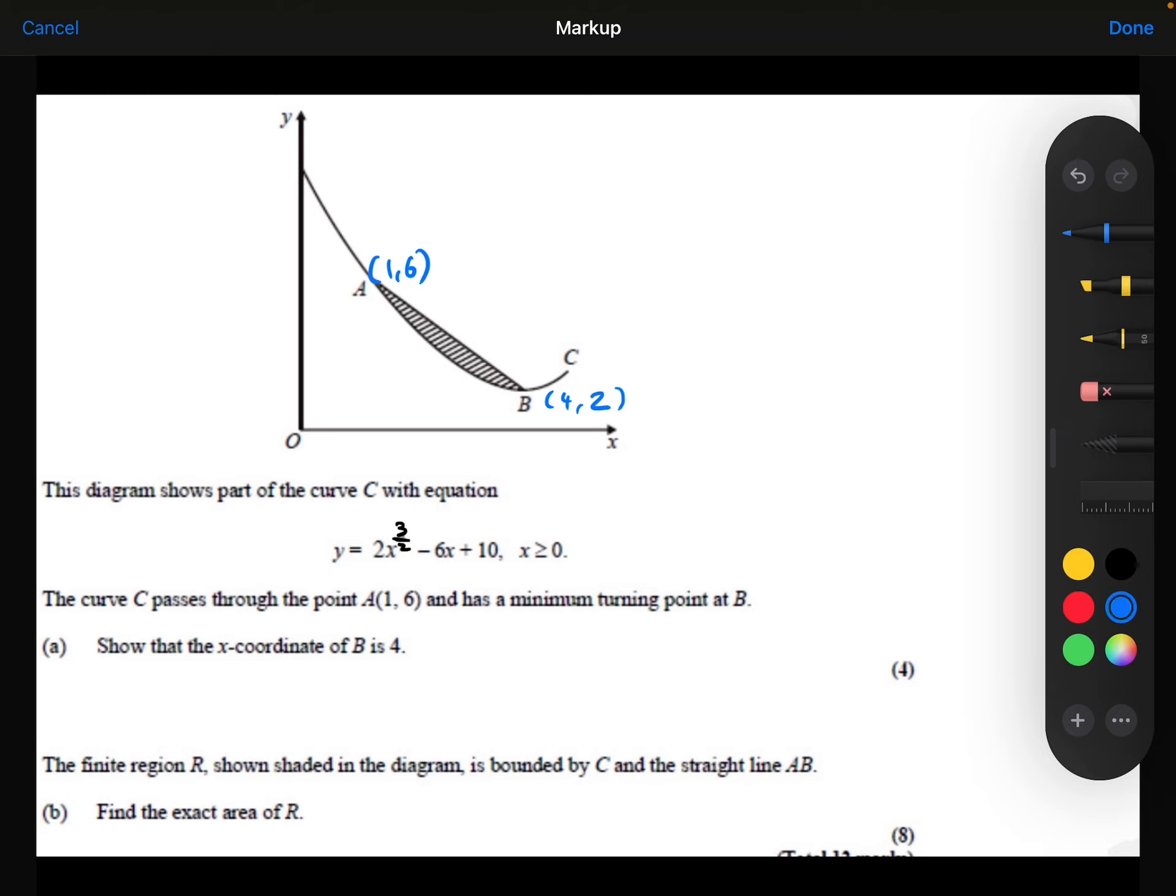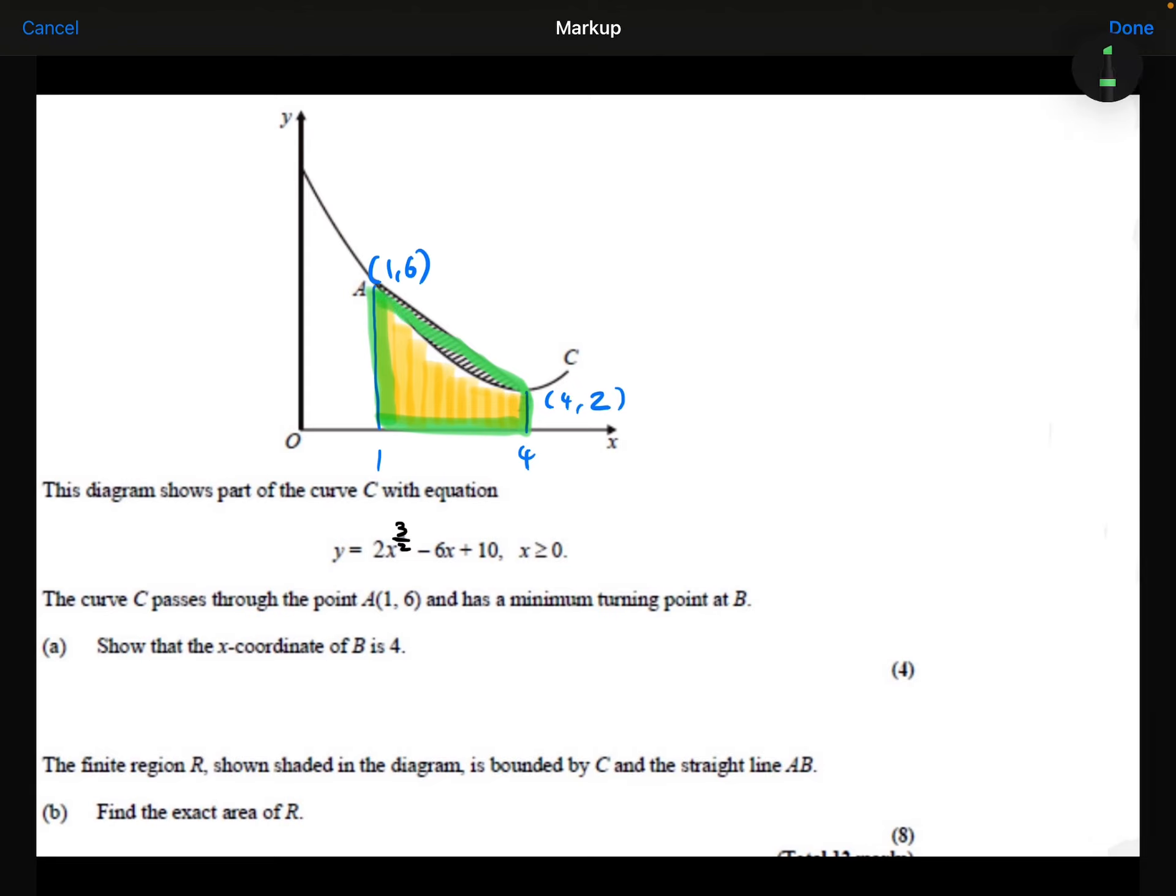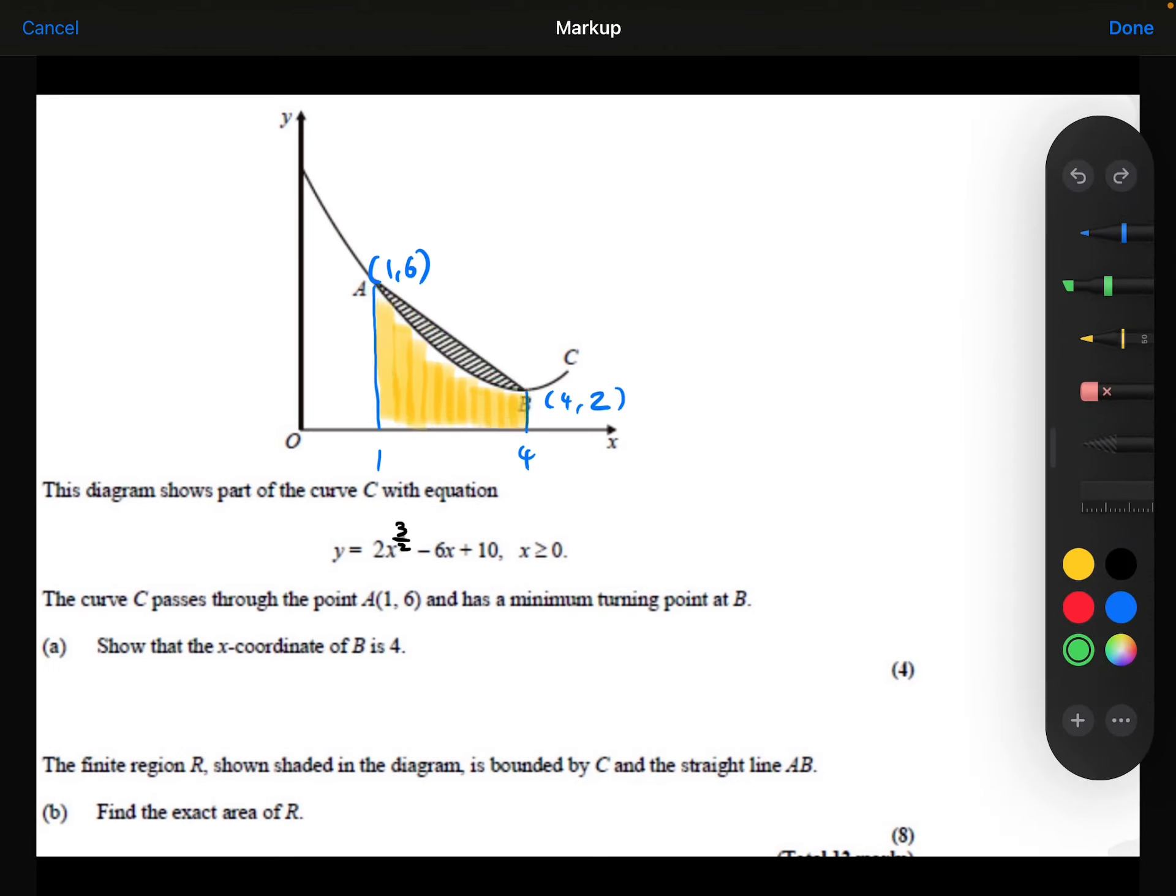Now, I know that if I were to integrate between x is 1 and x is 4, that would tell me the area underneath the curve between those points, this yellow area here. And if I then take that away from the trapezium, this trapezium here, so if I do that trapezium take away the yellow area, that's going to leave me with the shaded area that I need to find.